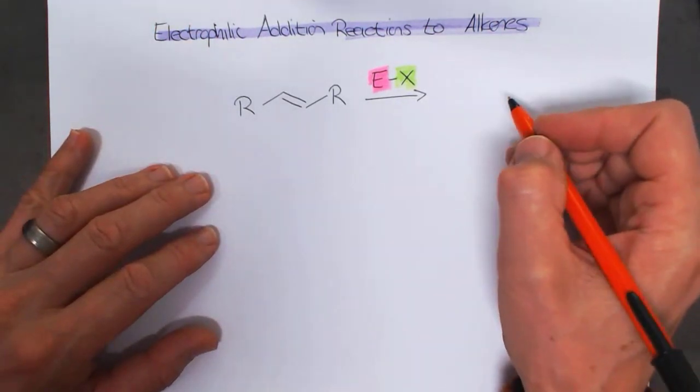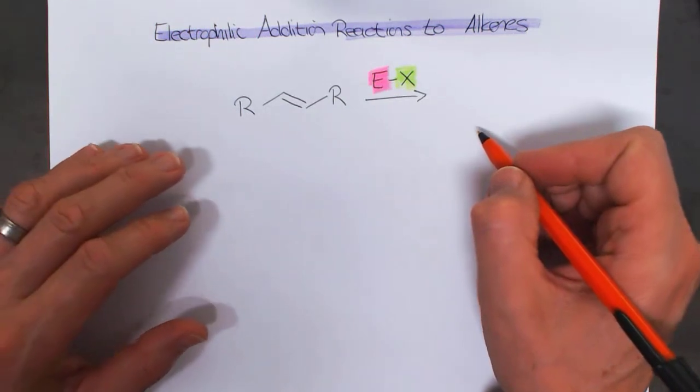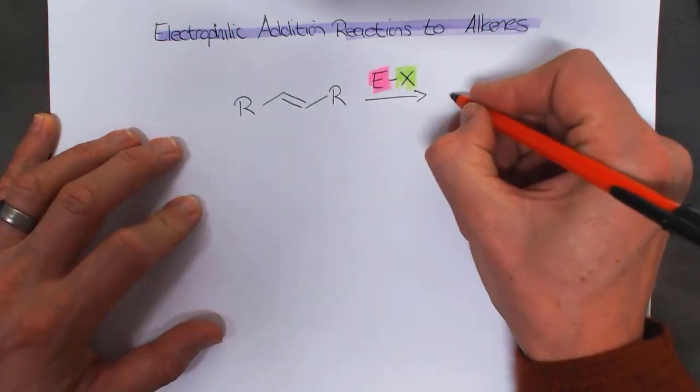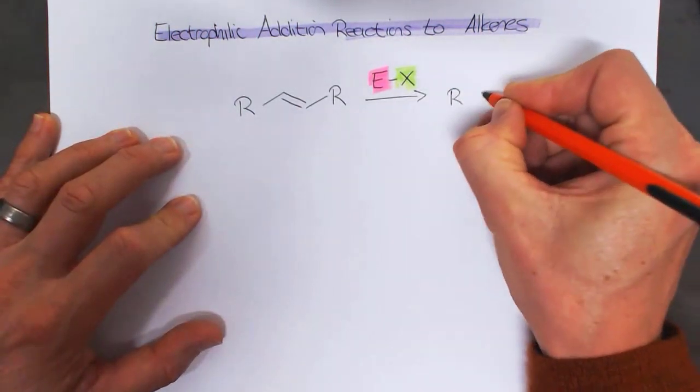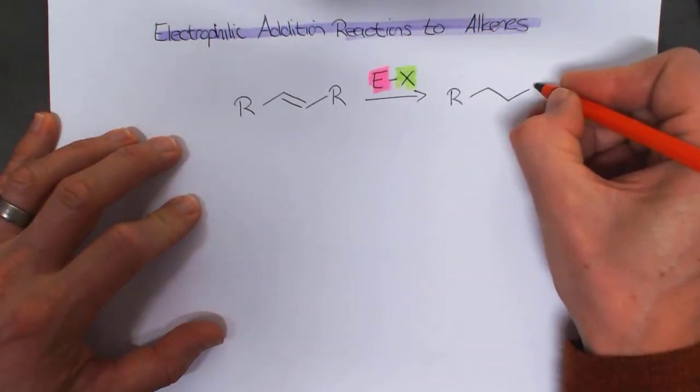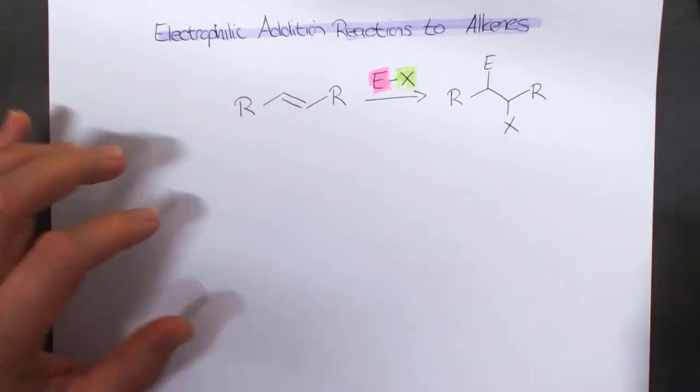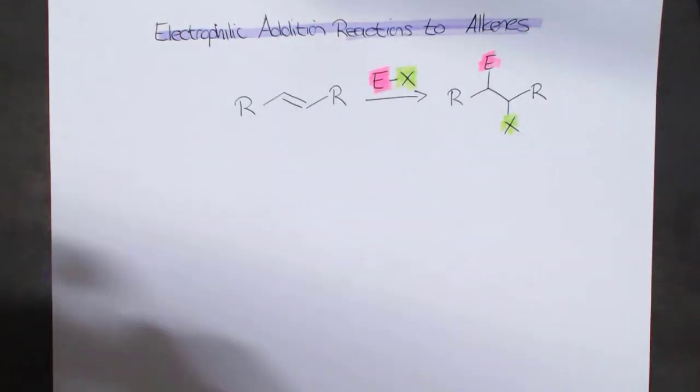In terms of the reaction, there are three different kinds of mechanisms that can take place. But essentially where we get to is a product that looks like we've added whatever our reagent is to our alkene. So we would often end up with something that looks like this.